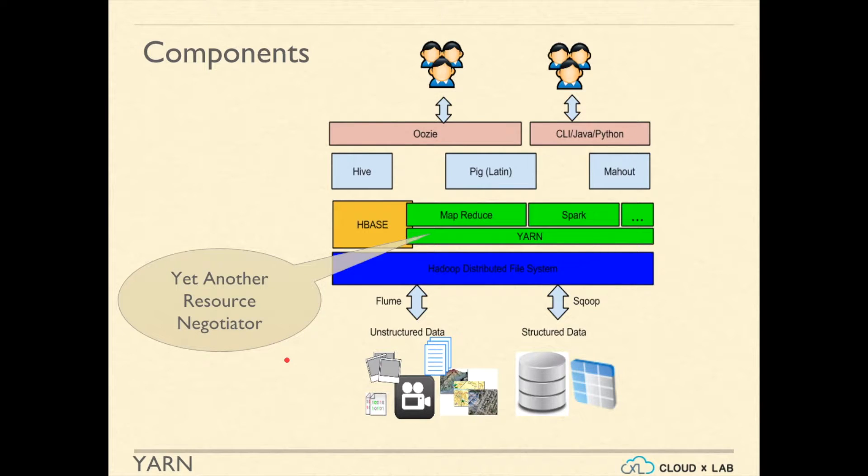YARN is a resource manager which keeps track of various resources such as memory and CPU of the machines in the network. It also runs applications on the machines and keeps track of what is running where.